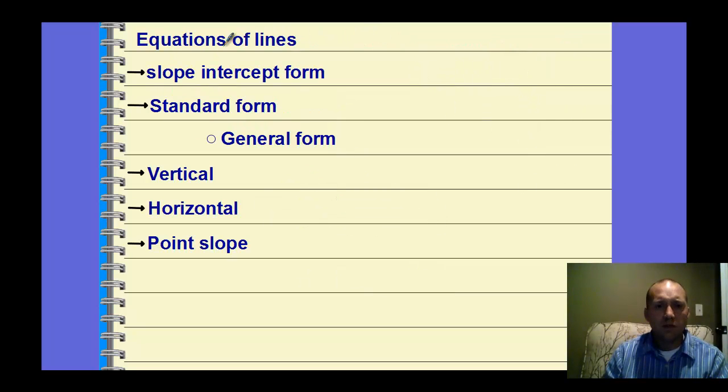Some of the forms of equations of lines. Slope-intercept form, y equals mx plus b. We note that m is the slope, b is the y-intercept. Standard form, we talked about this back in algebra, ax plus by equals c. And then a, b, and c are just constants here.